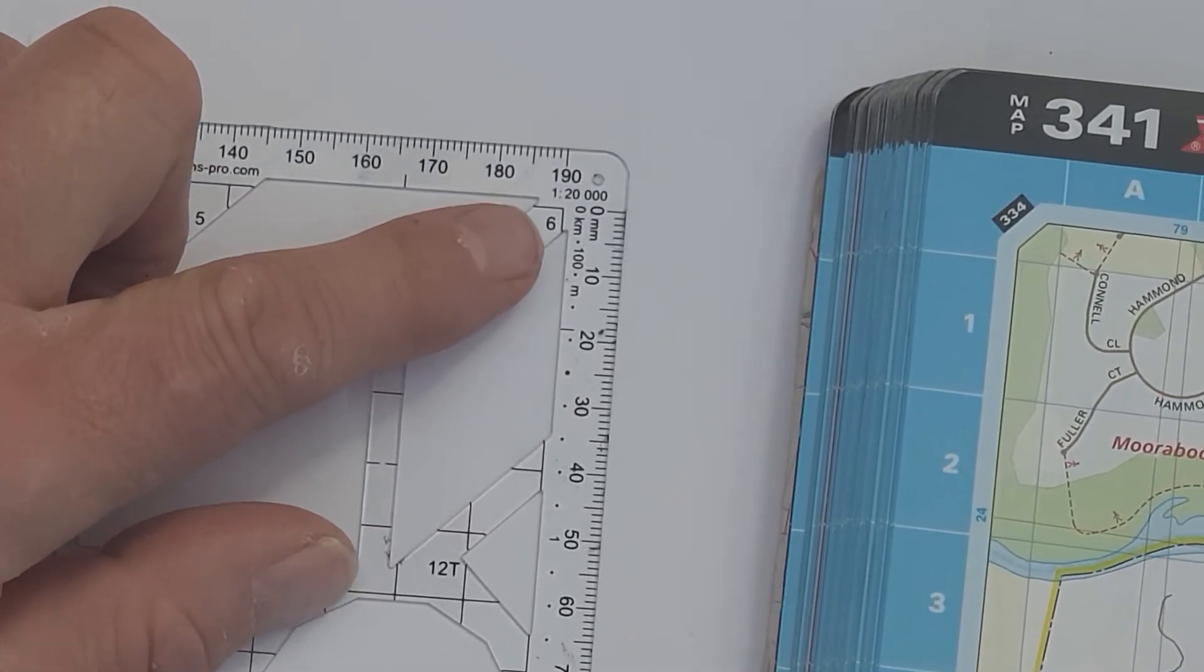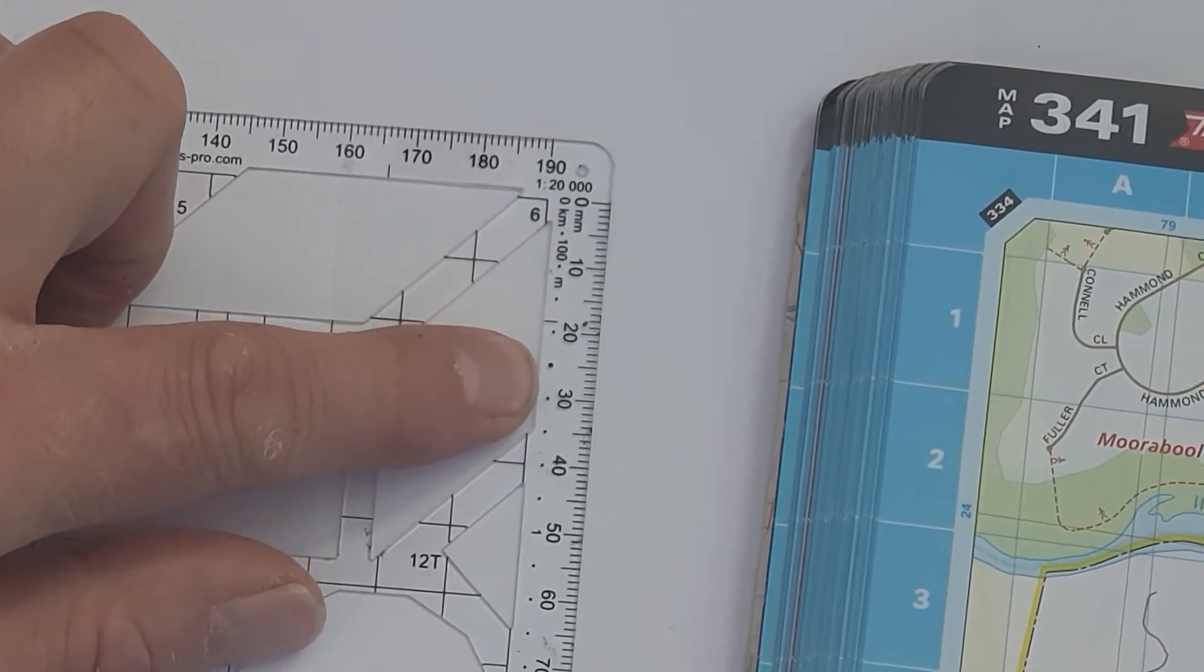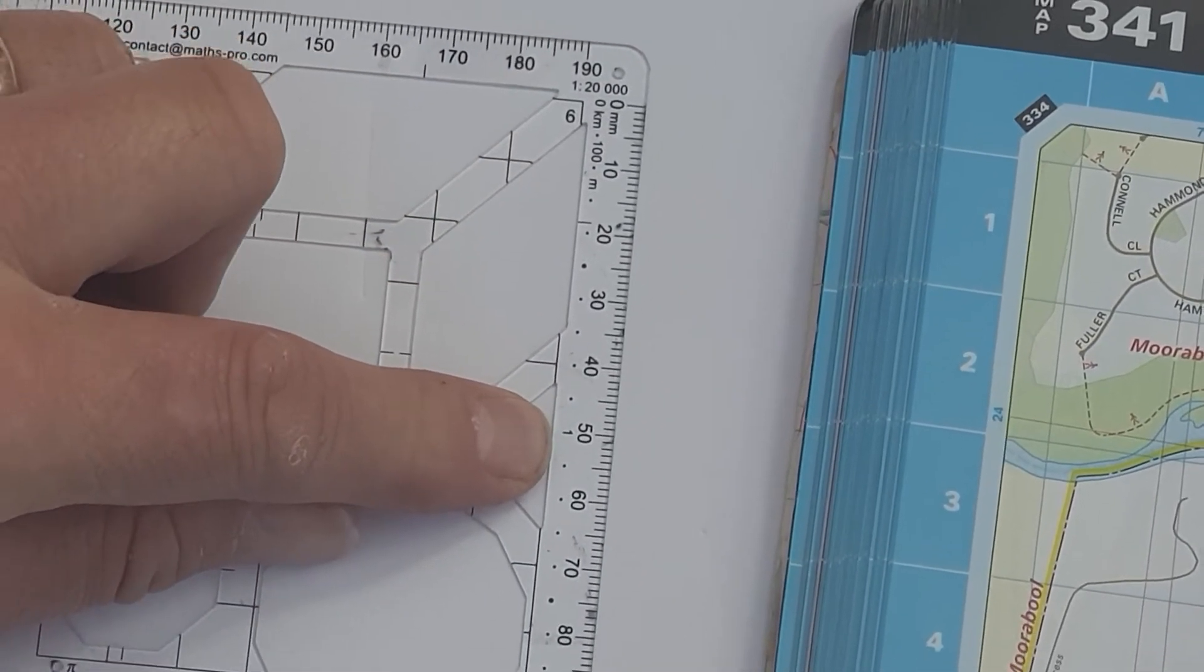So we go from zero, and the first bolder dot would be 500 meters or half a kilometer. Then the digits indicate the number of kilometers.